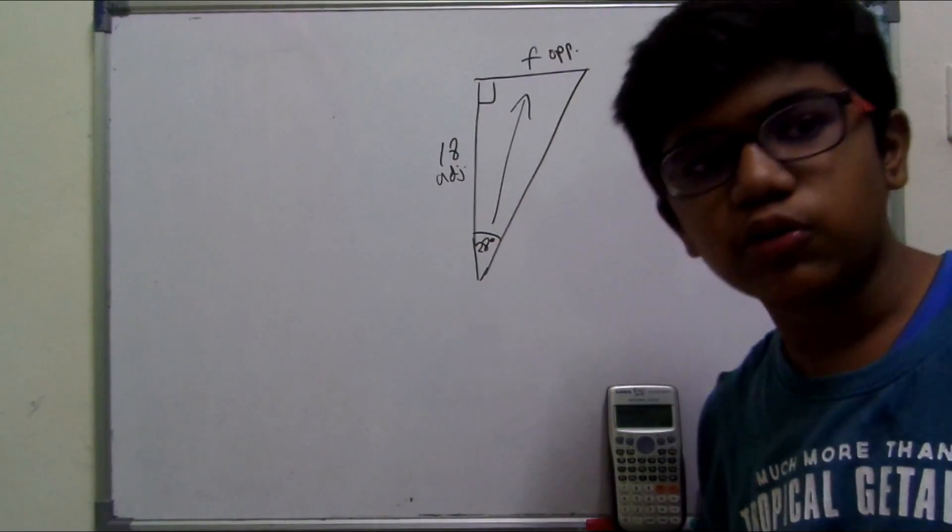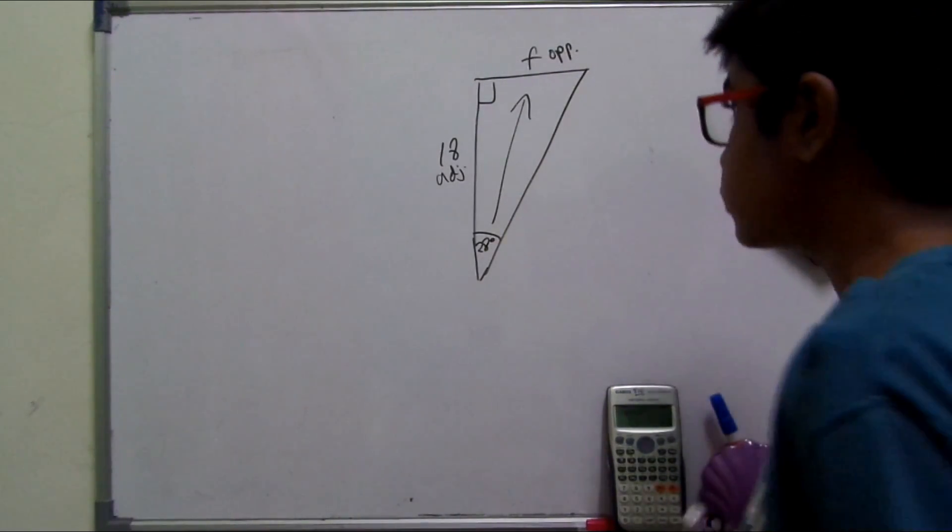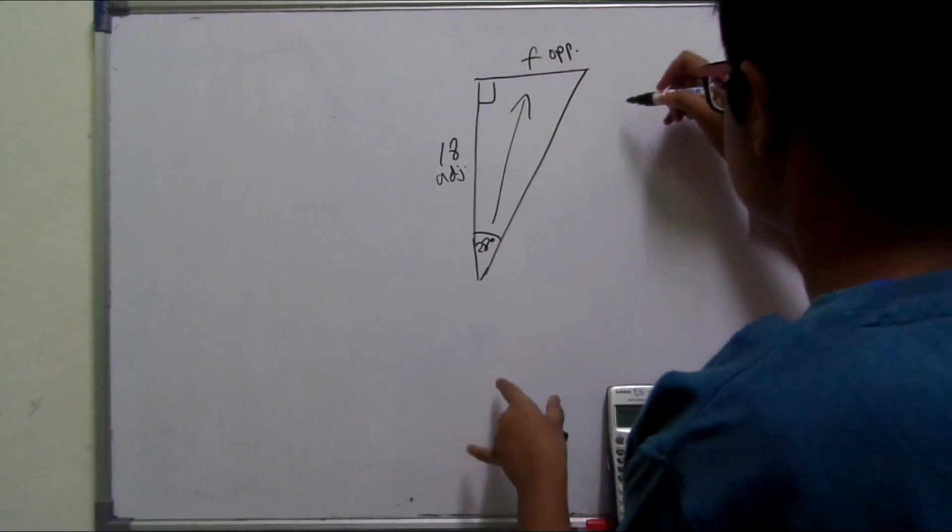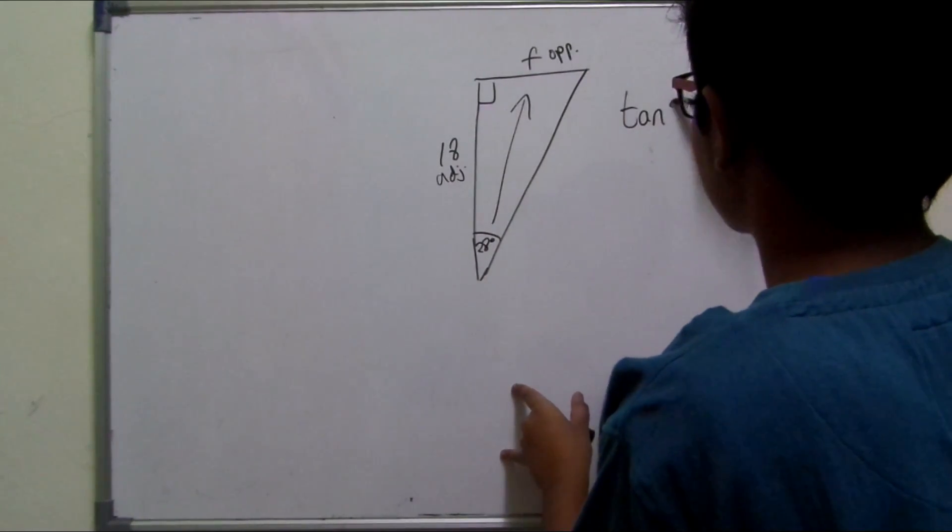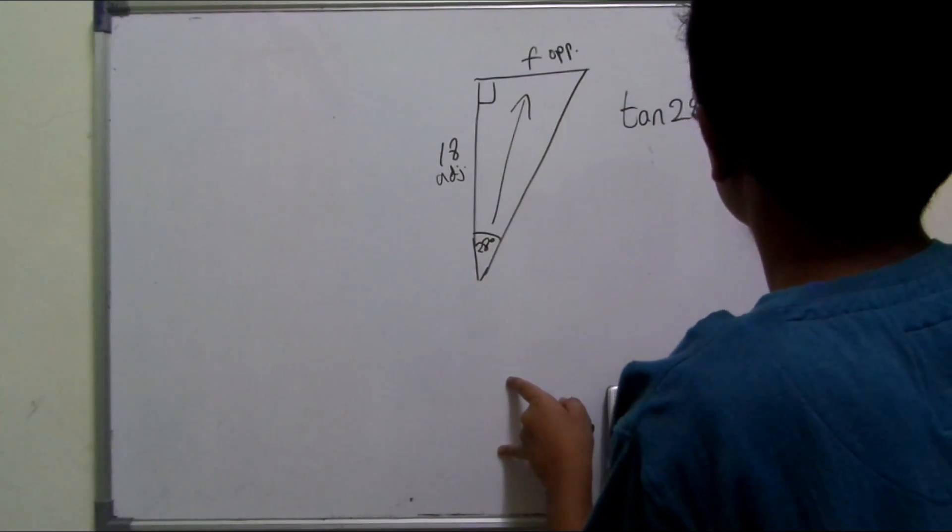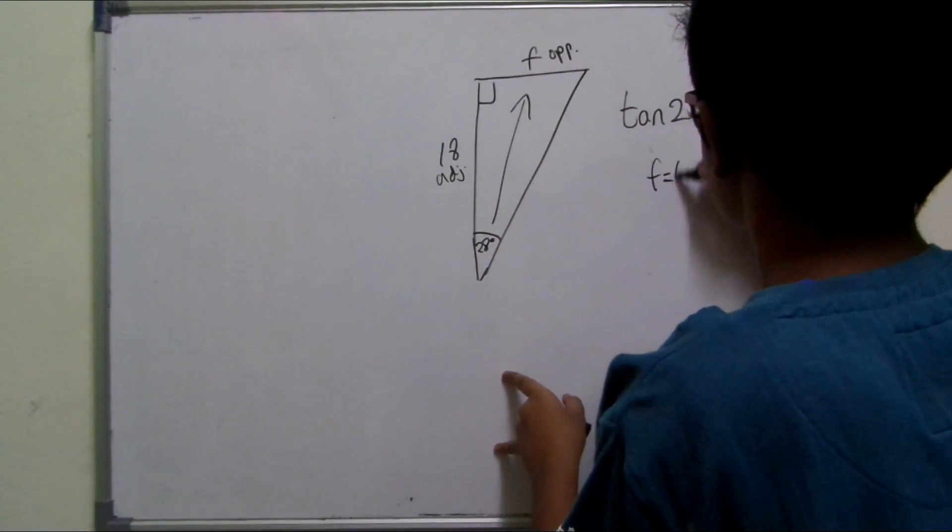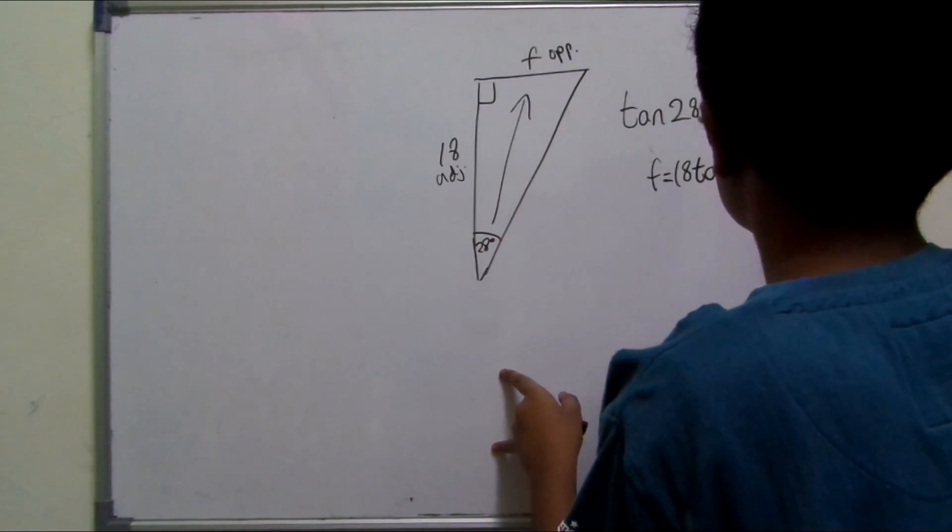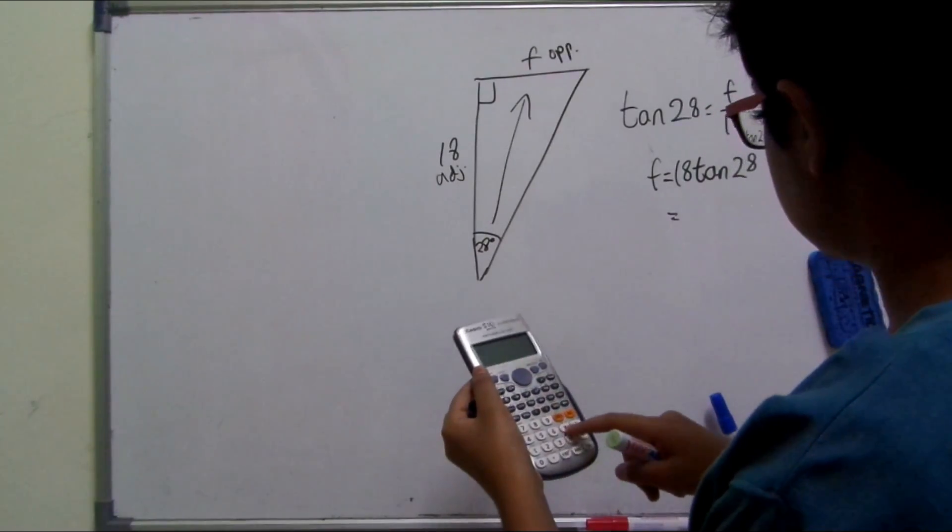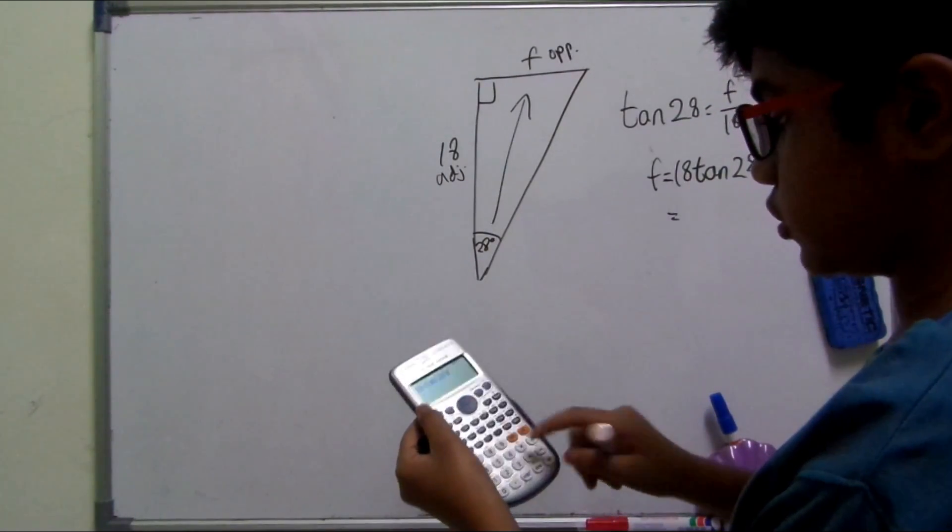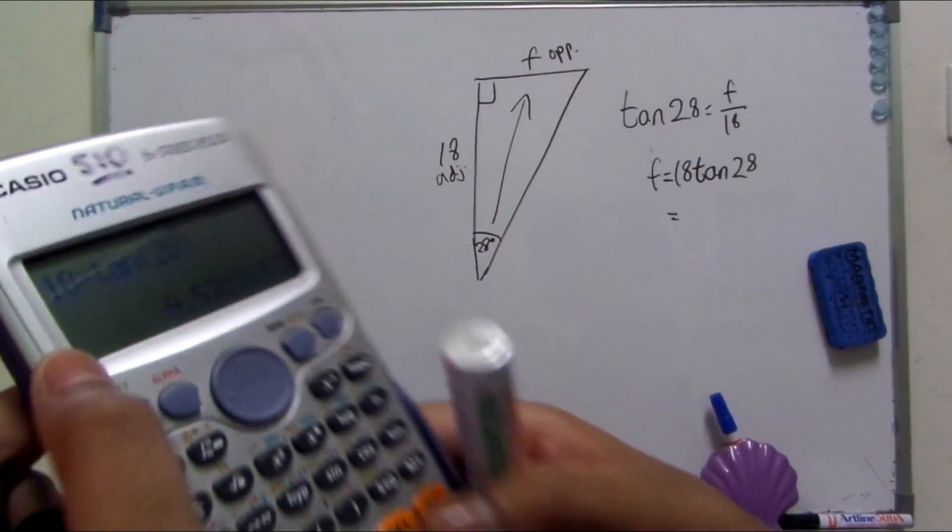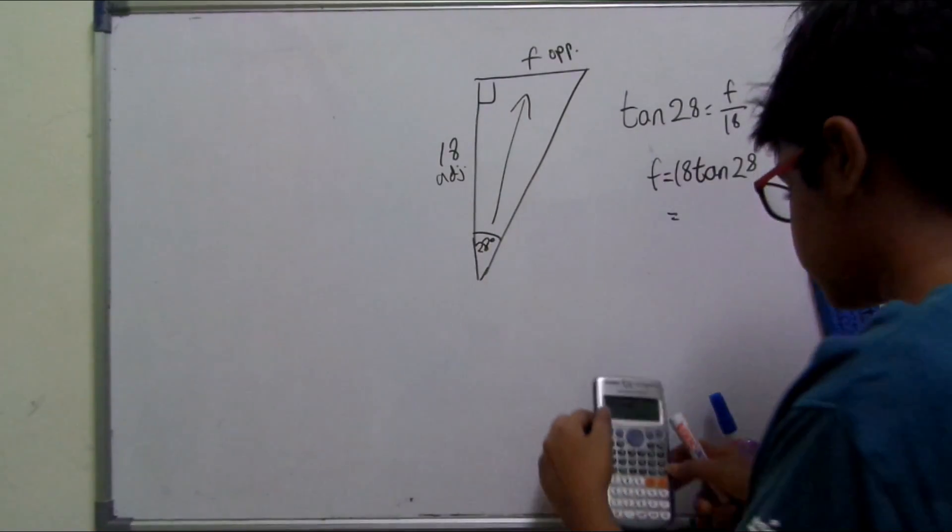Which sine, cosine, or tangent actually uses the adjacent and the opposite? And that is tan. So tan 28 is equal to the opposite over the adjacent. So f equals 18 tan 28. Isolate f on one side. Use the calculator. 18 times tan 28. And then you get 9.57076977...